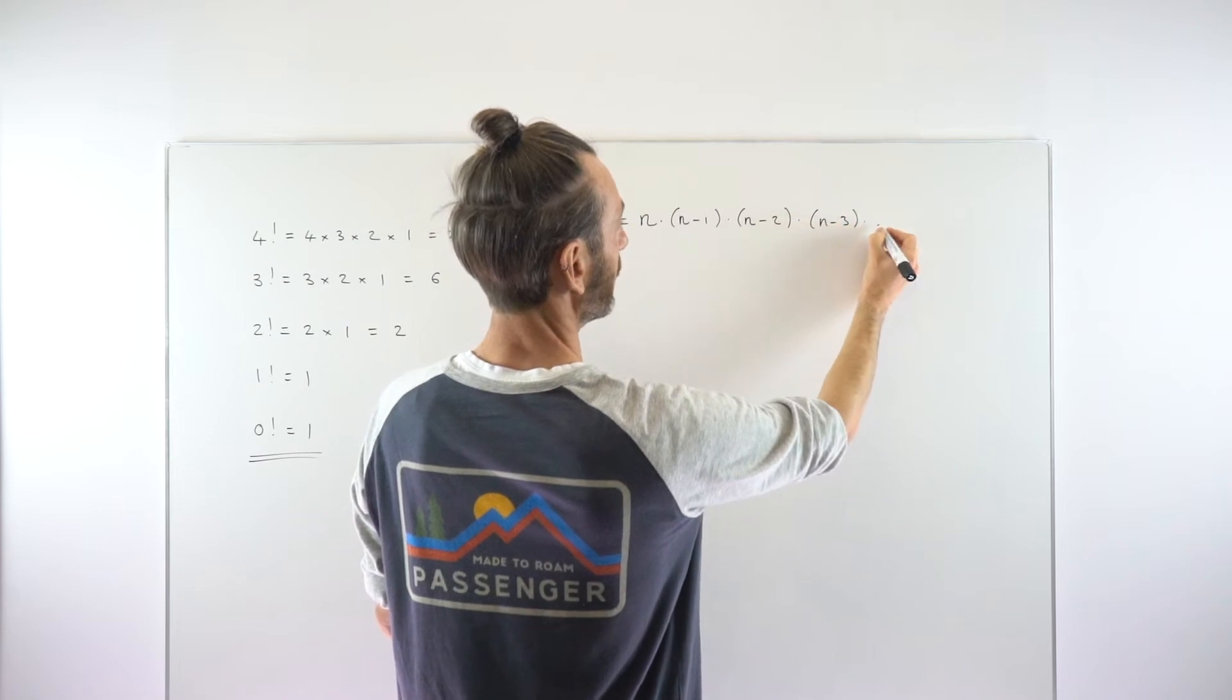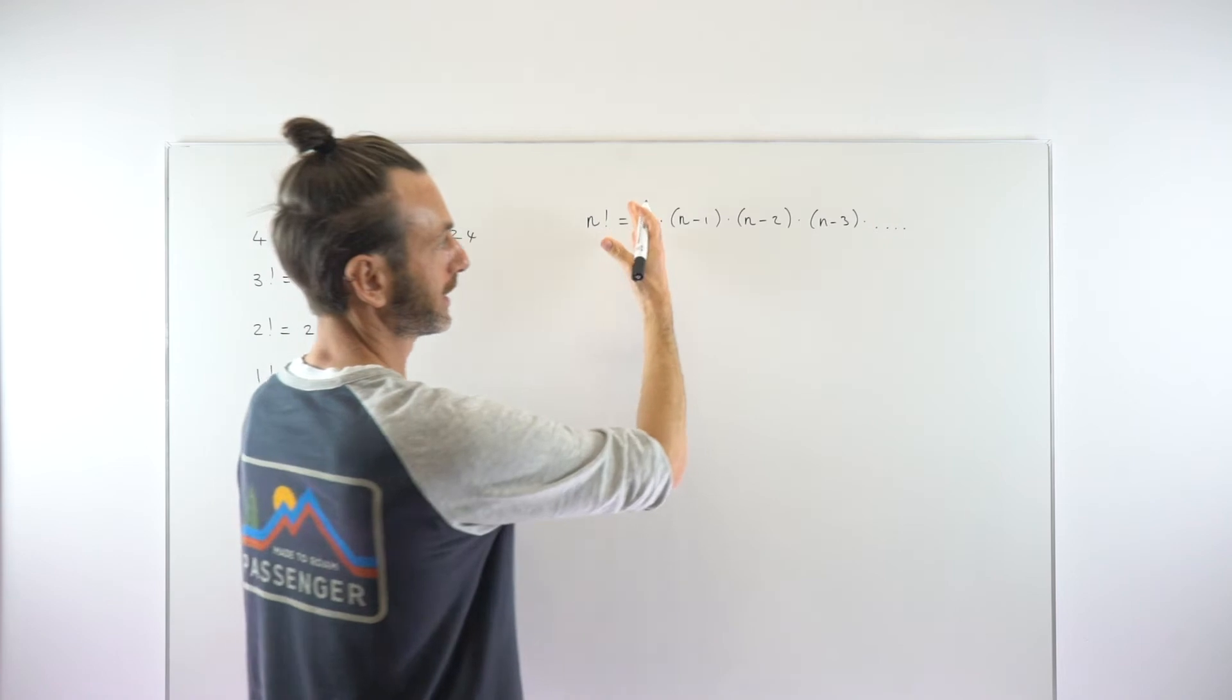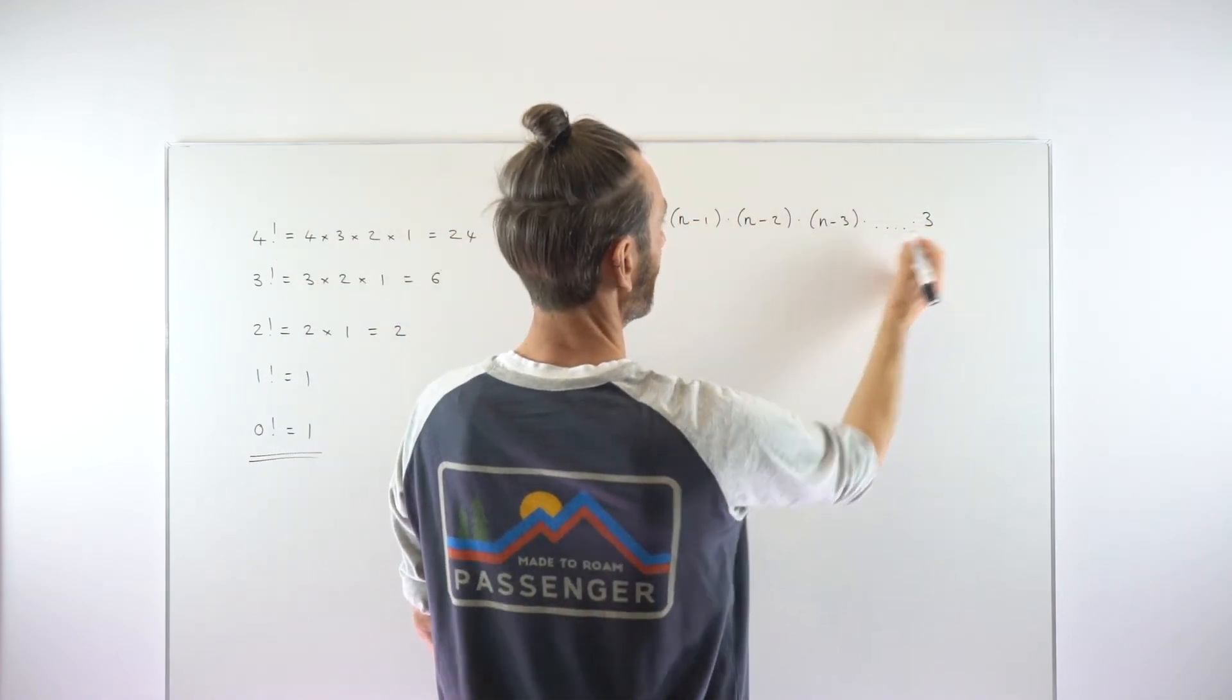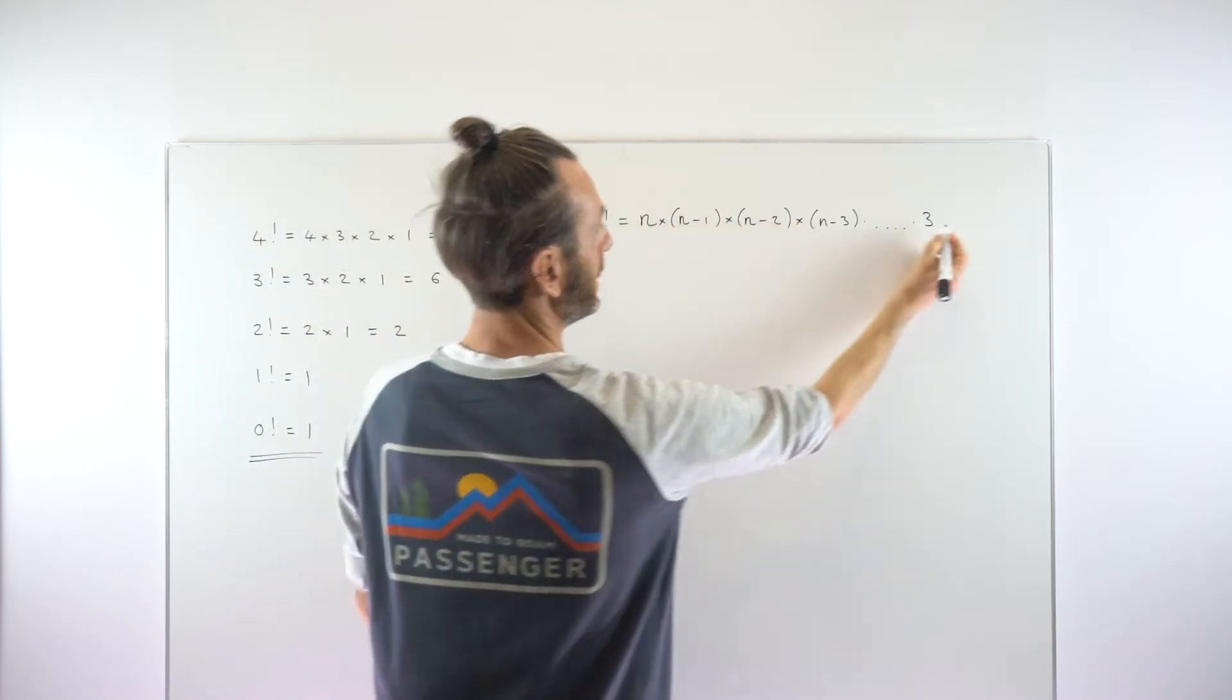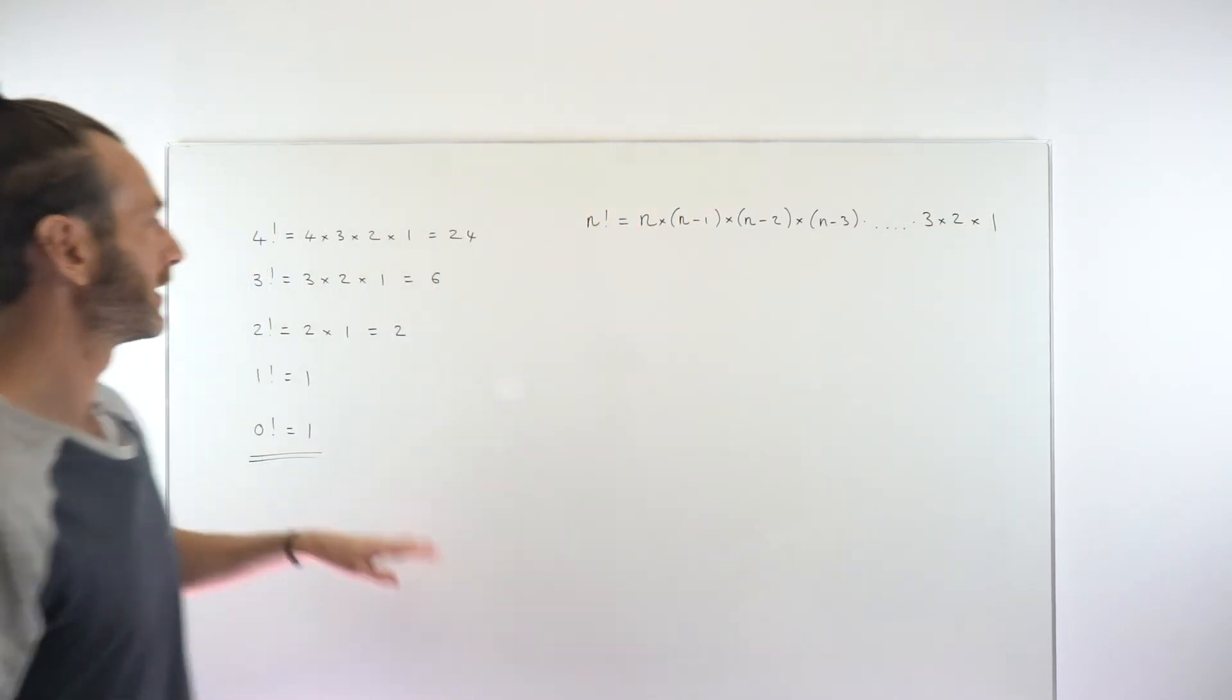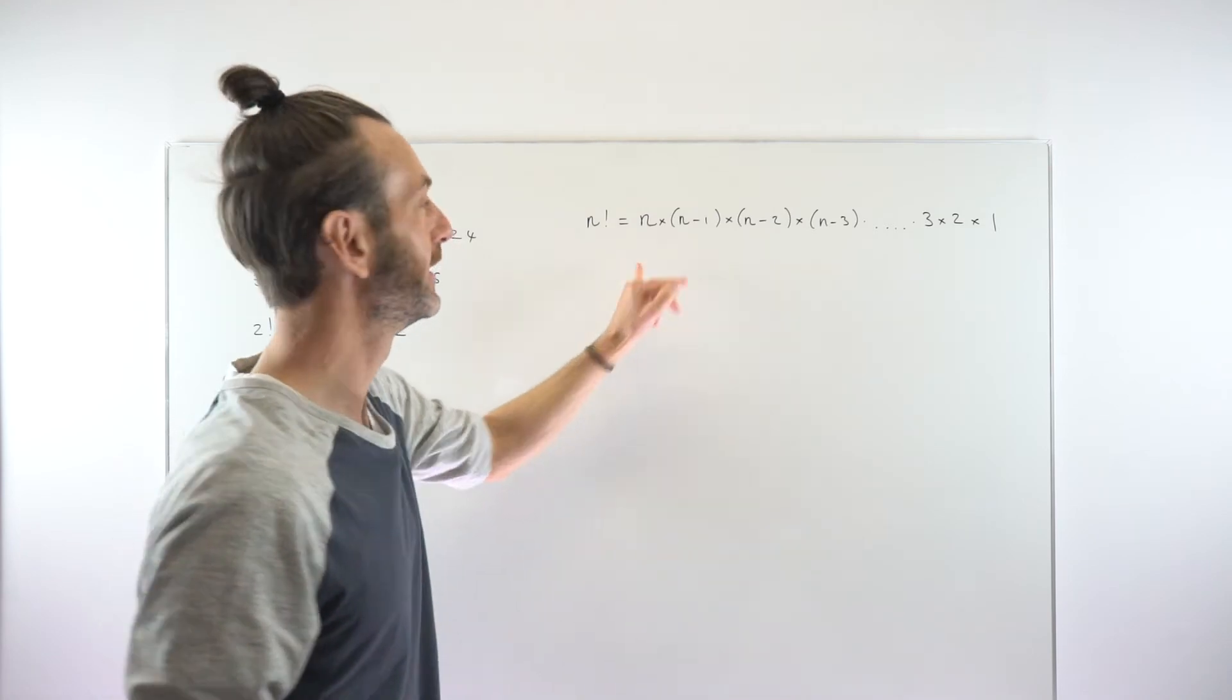And it would be times n minus 3. And that goes all the way down, depending on how big your n value is. That would dictate how many numbers you've got. And that's going to go all the way down to sort of 3 times 2 times 1. So just generalizing these concrete examples we looked at here to this more general n scenario.